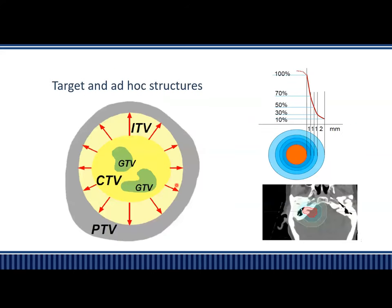The target — usually the GTV and the PTV, or in some clinics they make a CTV and then take a PTV margin — varies doctor to doctor in terms of volume positioning. One has to be very careful while taking those margins. Ad-hoc structures are required for planning in order to reduce and confine the dose to the volume.